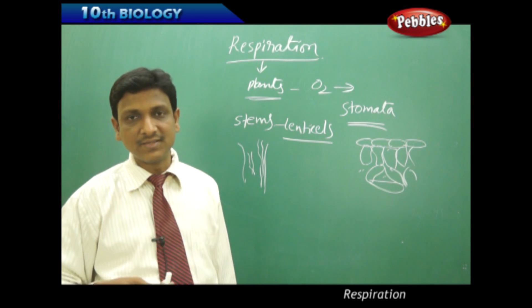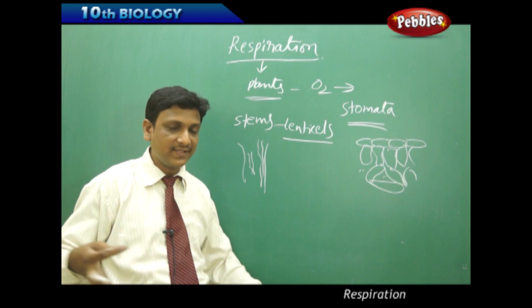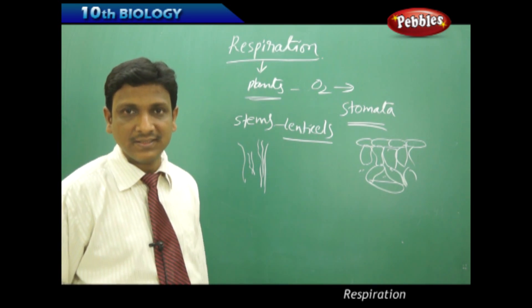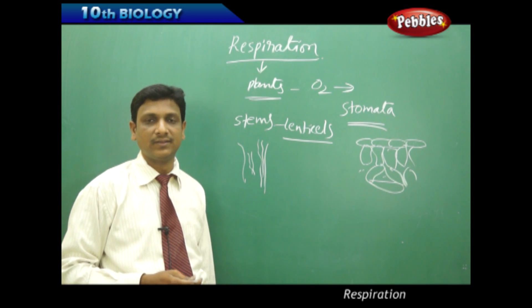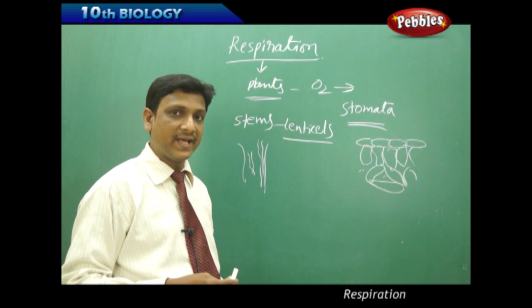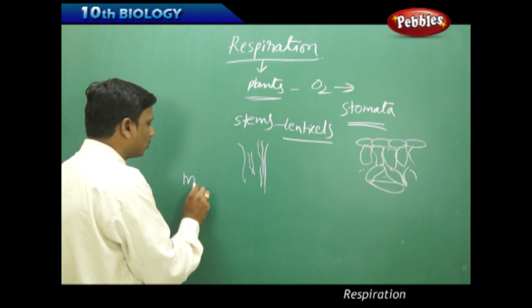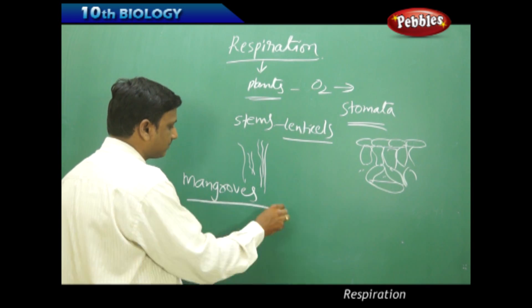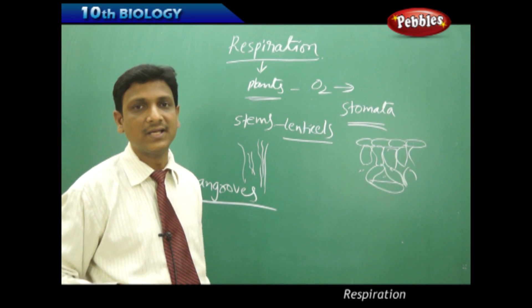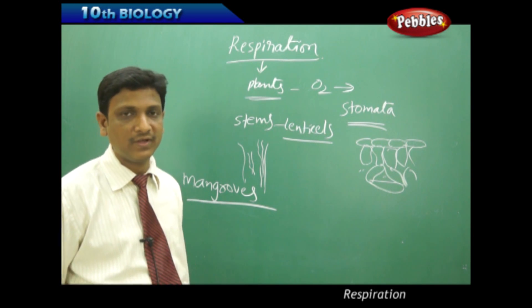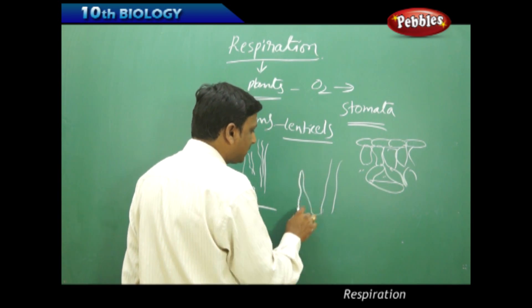That is the reason why roots grow well in loose soil. The roots need support from the soil to be held firmly, but at the same time they also need air. That is the reason why fields are plowed before sowing seeds — the roots of a growing plant need air from the soil. In cases where the soil is very muddy and swampy, such as mangrove forests, the roots are in a waterlogged area and there is no possibility of air reaching the roots.